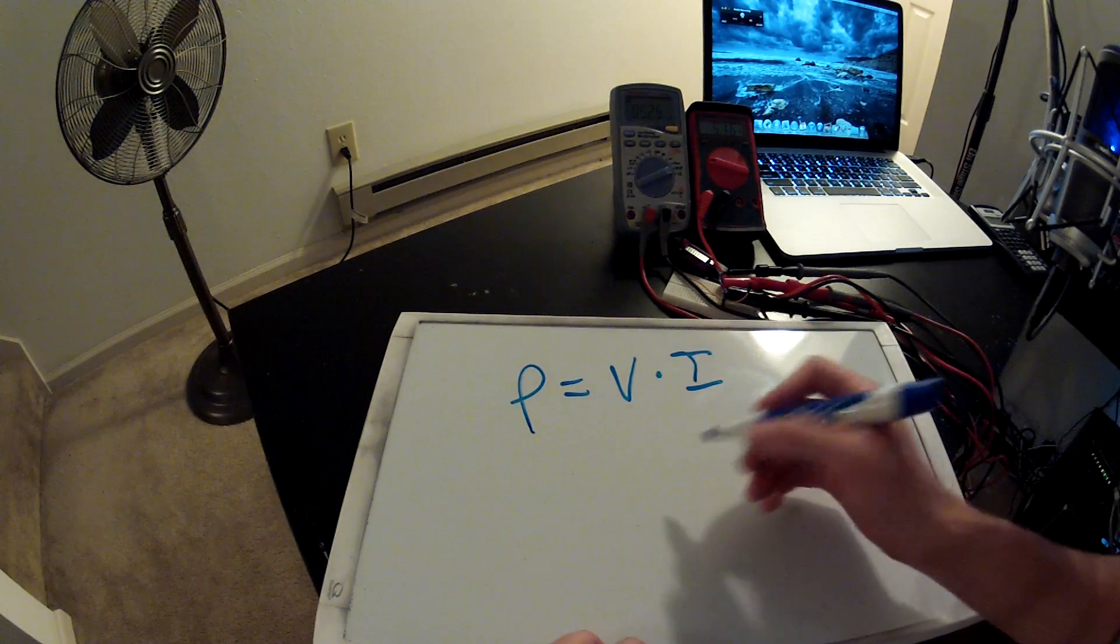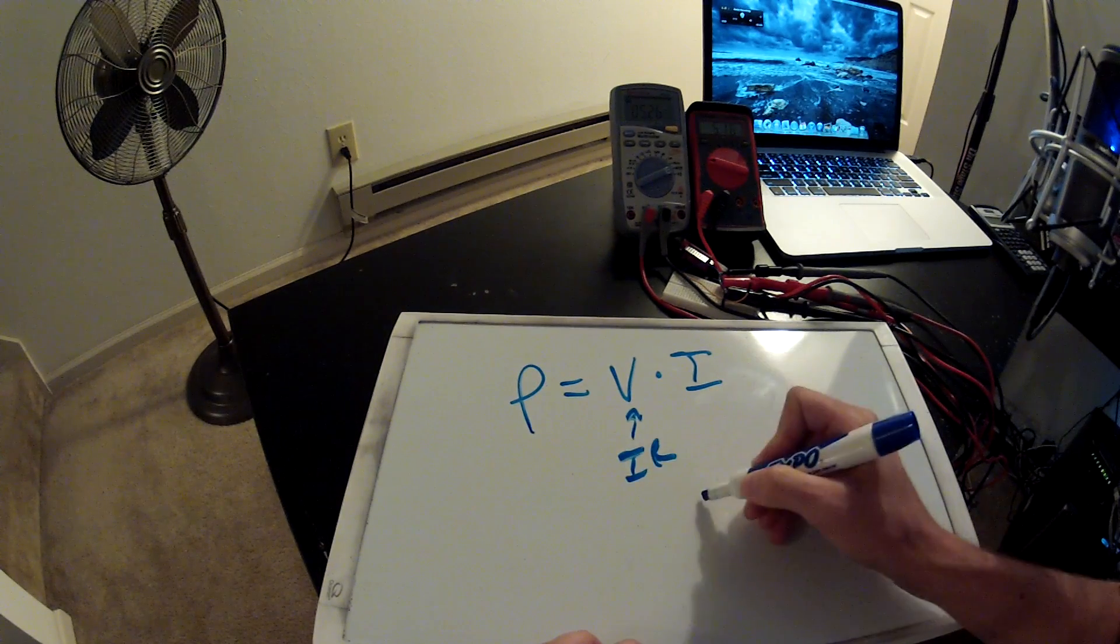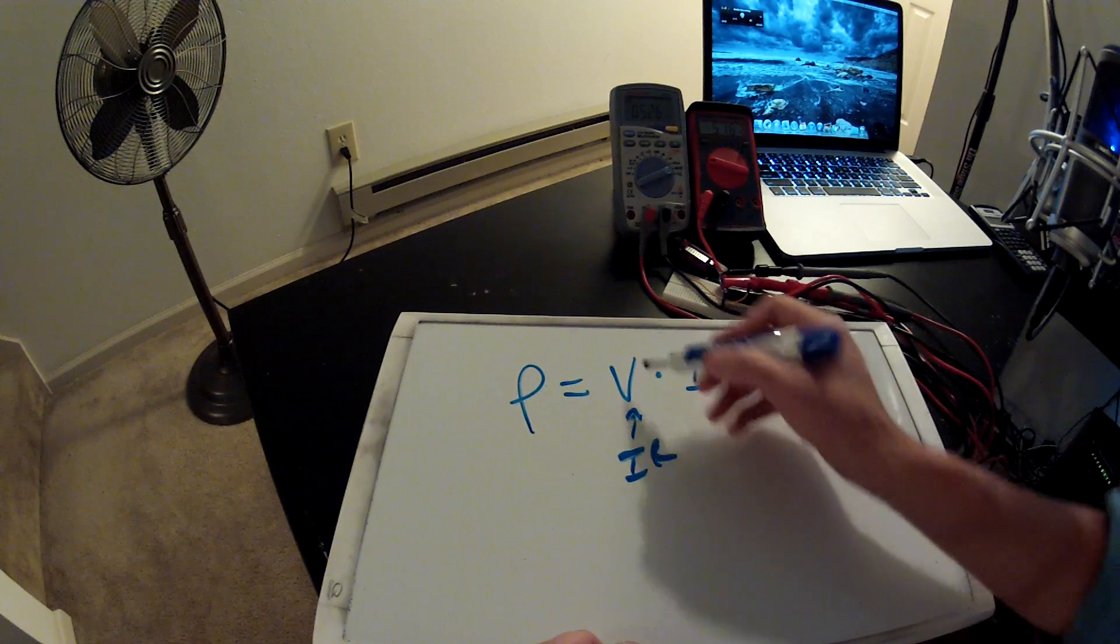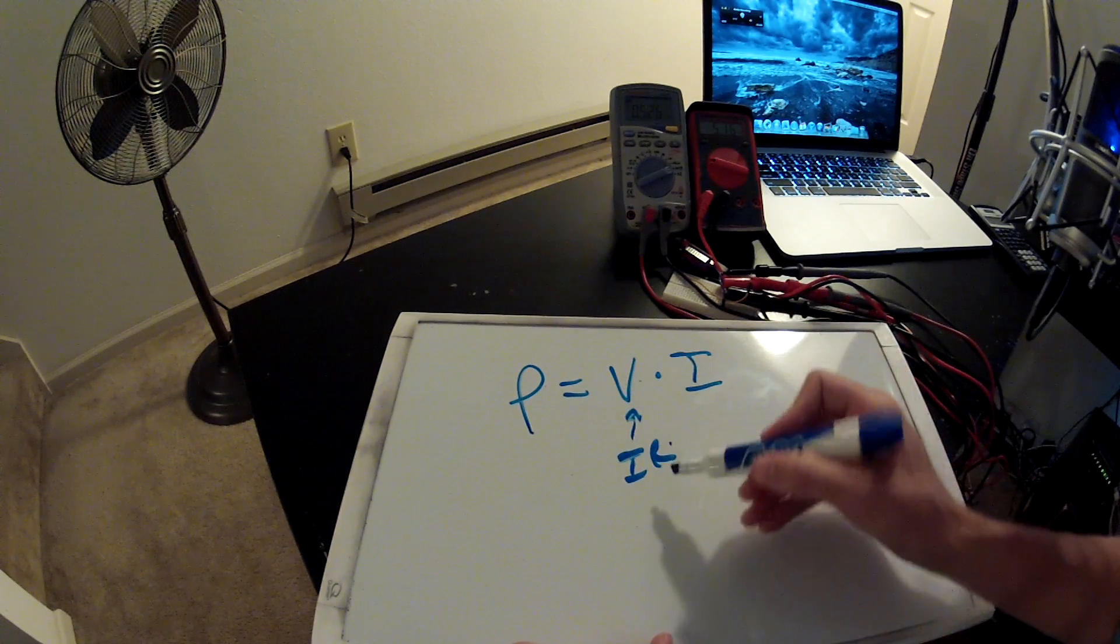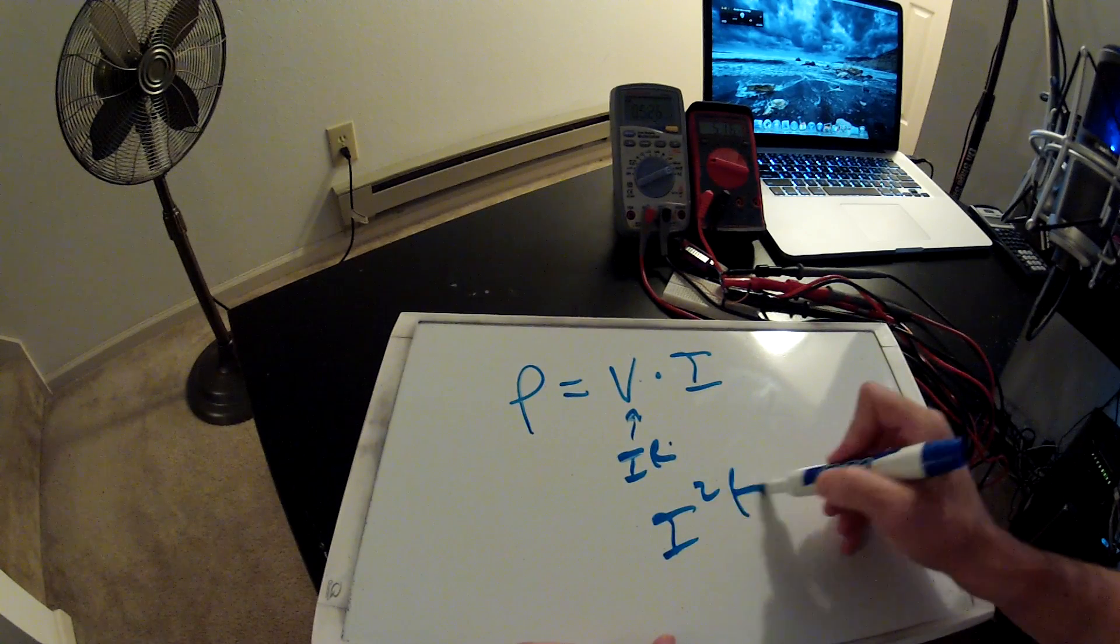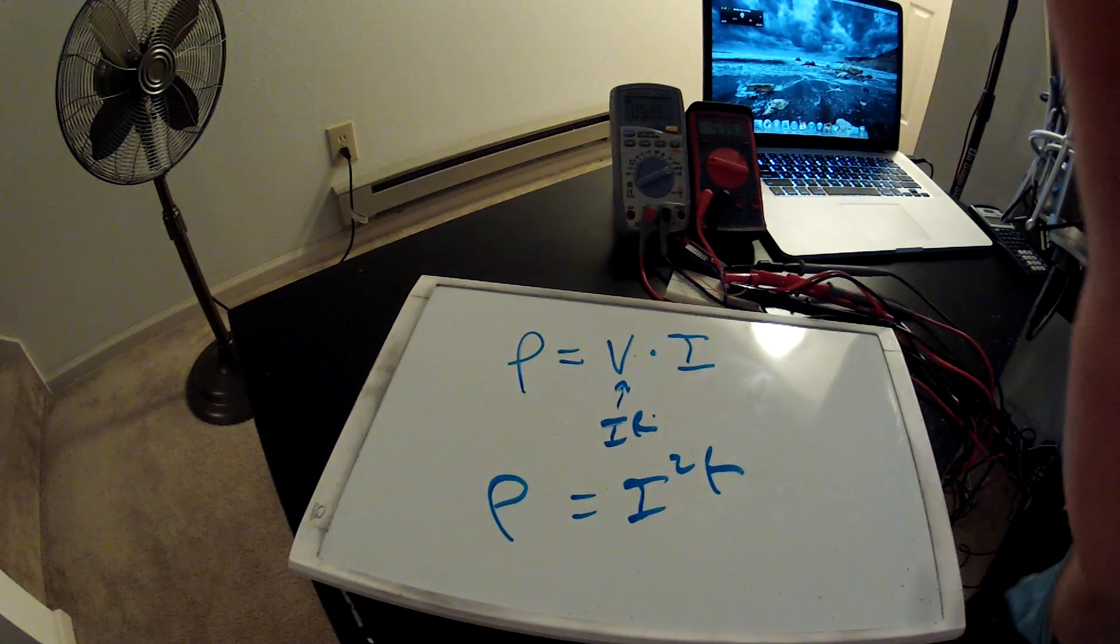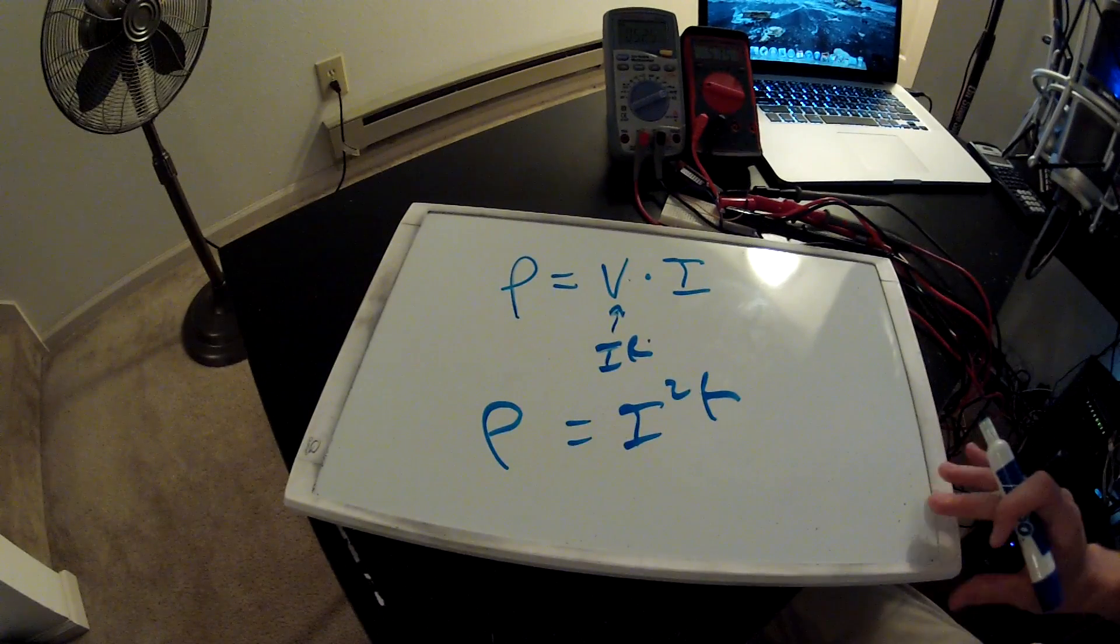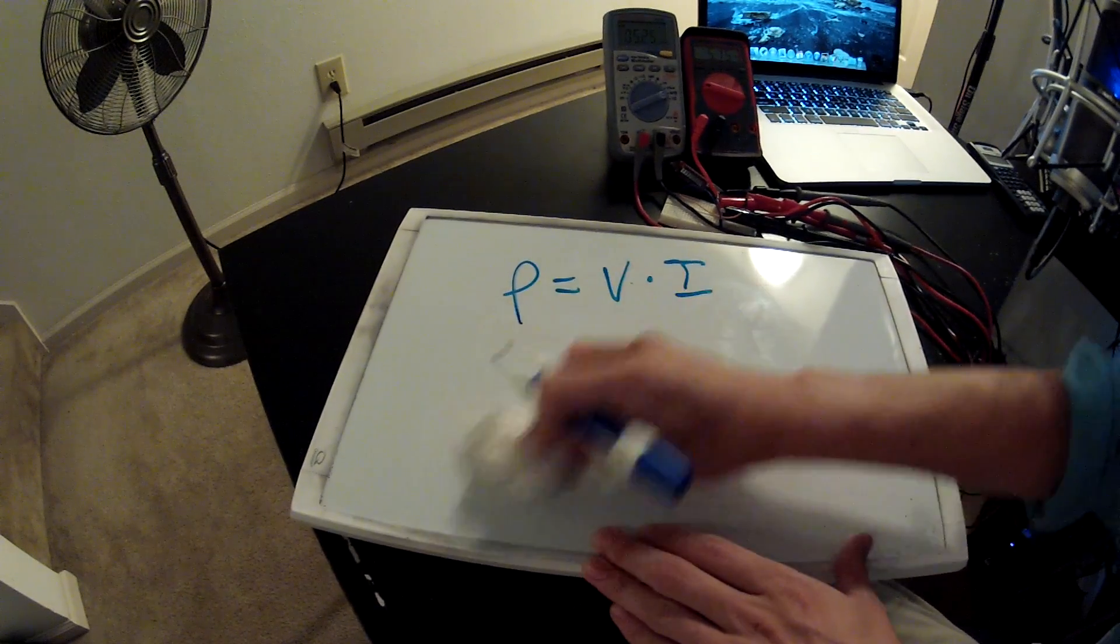that. We know from Ohm's law that V equals I*R, right? So if you substitute I*R for V here, so I*R times I gives you I squared R equals power. Hopefully the camera goes down that low. P equals I squared R. Now the other one, of course,